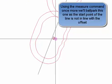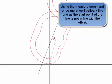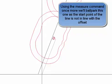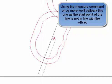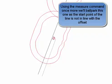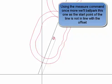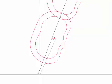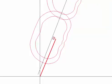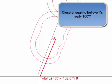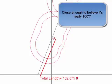How about the start distance? Using the measure distance command once more, we'll ballpark this one. The start point of the line is not in line with the offset, which makes it difficult to measure exactly. Close enough to believe it's really 100 feet.